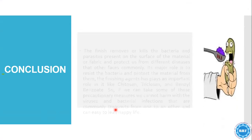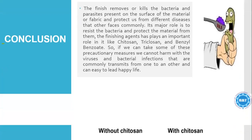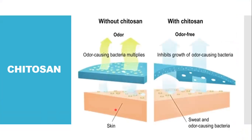In conclusion, the finish removes or kills bacteria and parasites present on the surface of the material, protecting us from different diseases. Its major role is to resist bacteria and protect material from them. Finishing agents such as triclosan and benzoyl benzoate play a very important role. If we take these precautionary measures, we can protect ourselves from viruses and bacterial infections that are commonly transmitted and lead a healthier life. Without triclosan, odor-causing bacteria multiply, but with it, odor is inhibited and the growth of odor-causing bacteria is controlled.